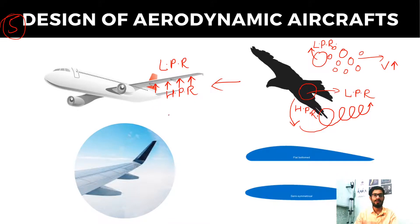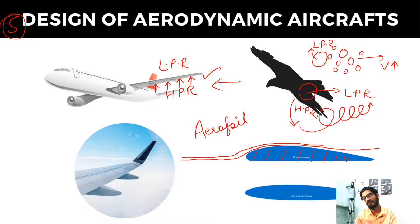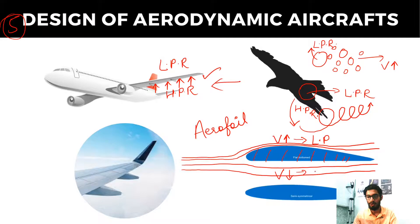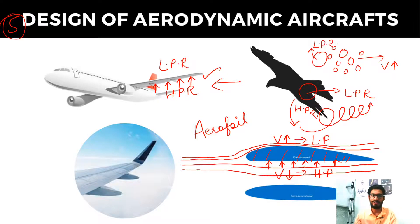Air molecules apply a force and lift the aeroplane as they move from the high pressure region to the low pressure region. We create a wing with an aerofoil cross-section — above the wing the flow is irregular, increasing velocity, while below it is smooth, decreasing velocity. Because of this, the region above the wing is lower pressure and the region below is higher pressure, generating the lift needed to fly the aeroplane.